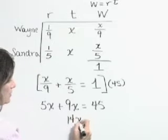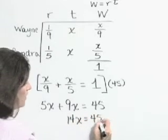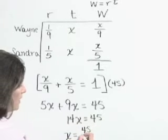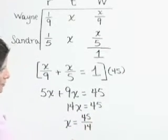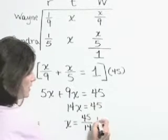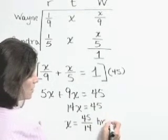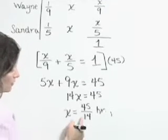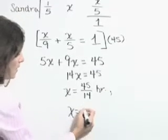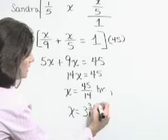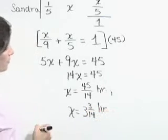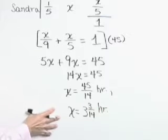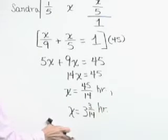Combining like terms gives 14X is 45, or X is equal to 45 fourteenths. Now, that's a time in hours. You might also write that as, in its mixed number form, three and three fourteenths hours. So the amount of time it's going to take Wayne and Sandra to complete this job working together is three and three fourteenths hours.